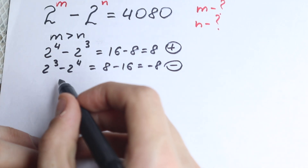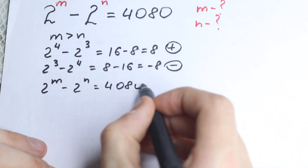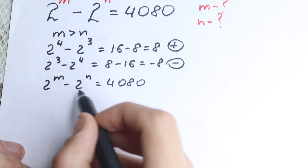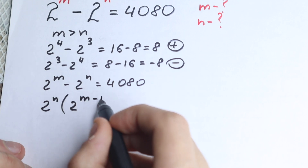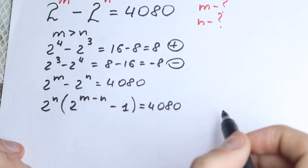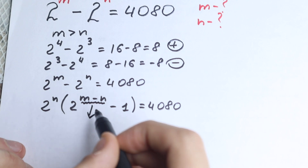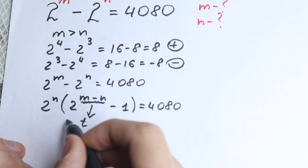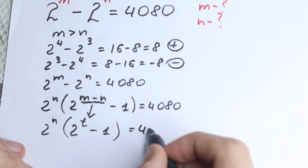Let's rewrite the equation: 2 to the power m minus 2 to the power n equals 4080. There are many methods, but I want to show you the best, quickest method. First, let's factor out 2 to the power n from the expression. We get 2 to the power n times, in parentheses, 2 to the power (m minus n) minus 1, equal to 4080. Now let's use substitution: let t equal m minus n, so 2 to the power (m minus n) becomes 2 to the power t.